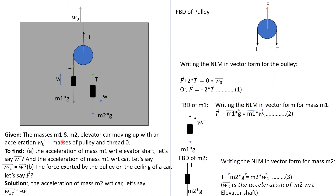We have made a free body diagram of this elevator car — this complete rectangular shape car is here. This whole car is moving with respect to the elevator shaft. The elevator shaft is attached to the building and the building is attached to the ground. So W0 is the acceleration of the car in the upward direction with respect to the elevator shaft, that is with respect to ground.